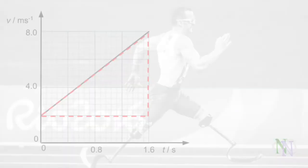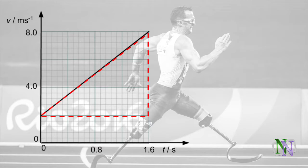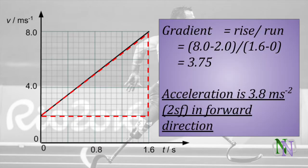A gradient is calculated using a triangle drawn on the line dividing the vertical rise by the horizontal run. The vertical change is from 2 to 8m per second, and this happens during 1.6 seconds. The result is 3.75. We give the answer to two significant figures, and we do not forget to include the units, nor the direction.